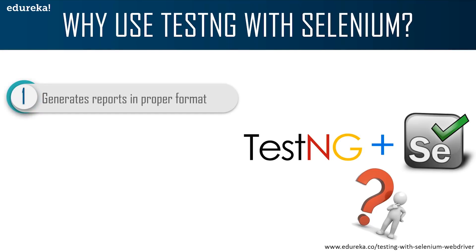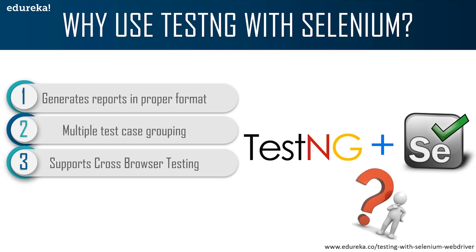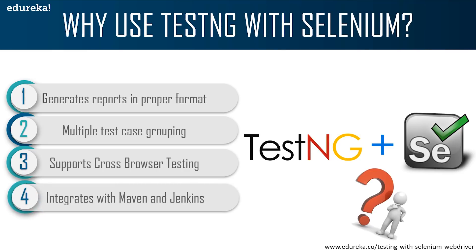TestNG also helps in generating a report in a proper format that includes the number of test cases run, passed, failed, and skipped. Multiple test cases can be grouped more easily by converting them into a TestNG XML file, where you can set priorities on which test cases should execute first. You can also execute multiple test cases on multiple browsers, meaning it supports cross-browser testing, and TestNG can be integrated with frameworks like Maven, Jenkins, etc.